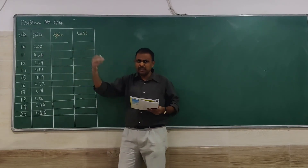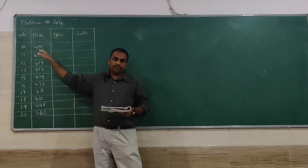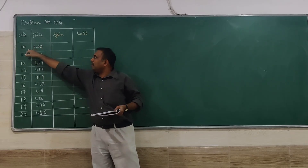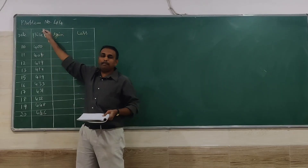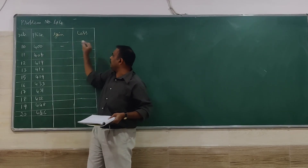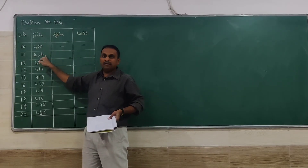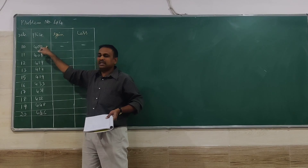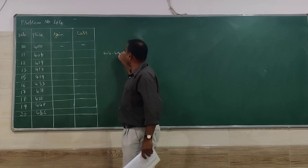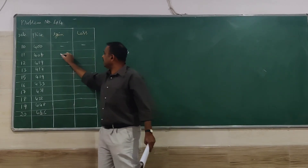To do this, we first find the gain or loss from each day's change in price. For example, on the 10th day we have a price of 400, but we cannot find gain or loss for that day because we have no previous day's information. On the 11th day the price is 404 and the previous day is 400, so 404 minus 400 gives plus 4 — that indicates a gain.